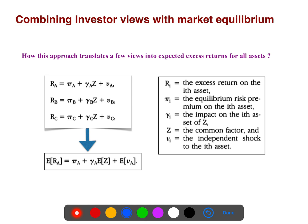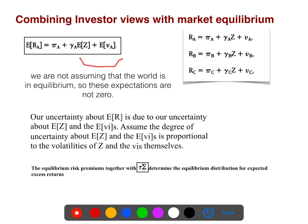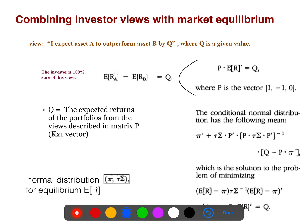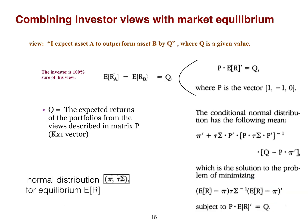They use a simple example in the original 1992 paper. Pi is the equilibrium risk premium on the asset, and you have some other factors that affect the return of that asset. You are trying to minimize this cost function subject to the given constraints.